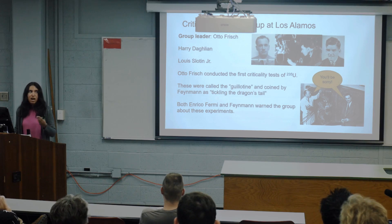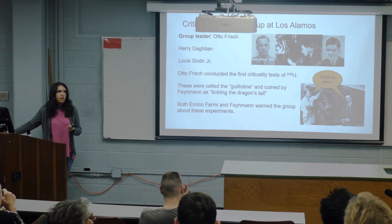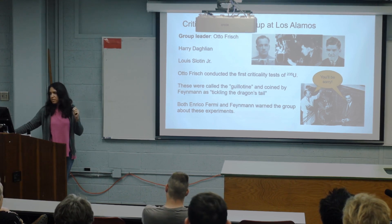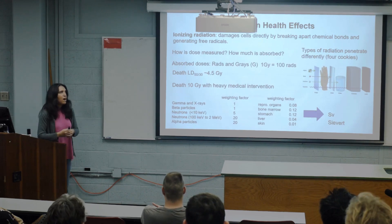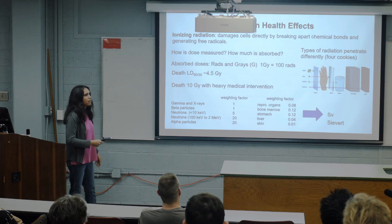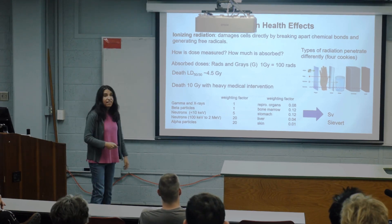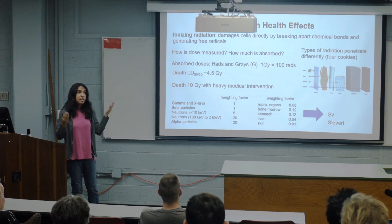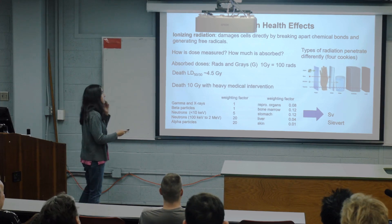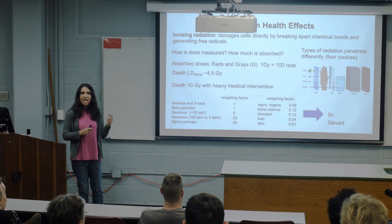Why are these criticality experiments so dangerous? The biggest risk isn't an explosion — it's radiation you can't hear, see, or taste. Ionizing radiation has very high frequency and low wavelength; it damages cells directly by breaking apart chemical bonds and generating free radicals, either directly or indirectly by radiolysis of water. There's the 'four cookies' analogy: an alpha cookie, a beta cookie, a gamma cookie, and a neutron cookie — you must eat one, put one in your pocket, hold one, and throw one away.